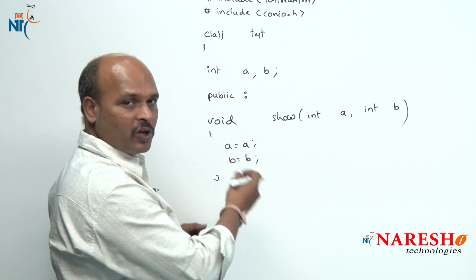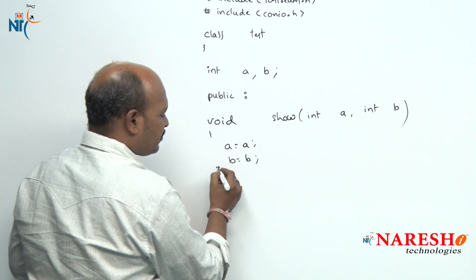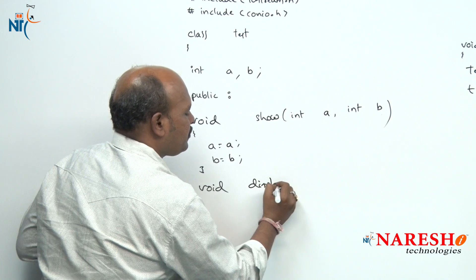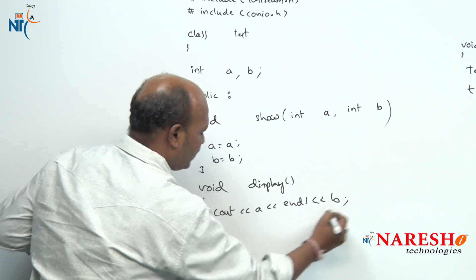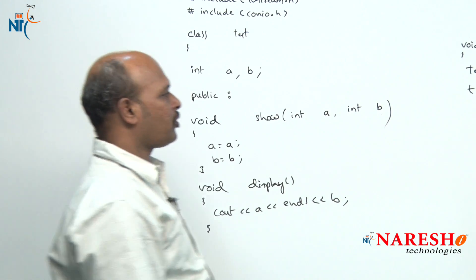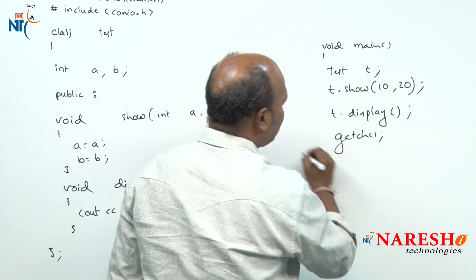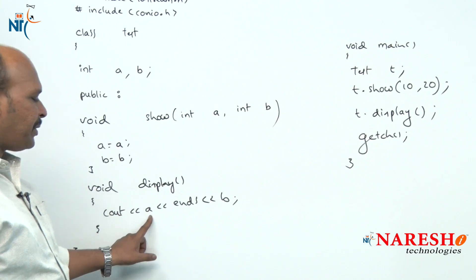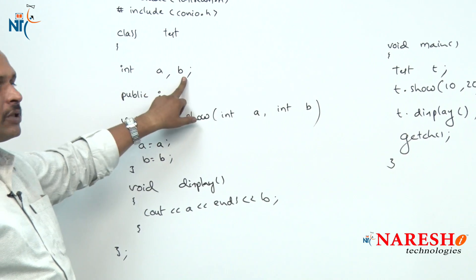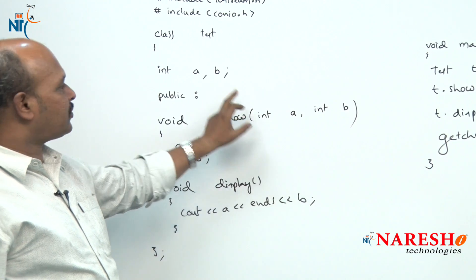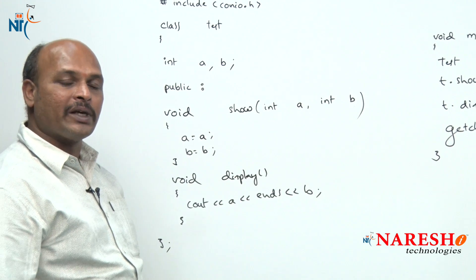To observe this problem, a `void display()` function is added that prints `a` and `b`. When `t.display()` is called, it gives garbage values, because the data members were never properly initialized — the local variable priority system meant the data members were not recognized, and their initial values are garbage.